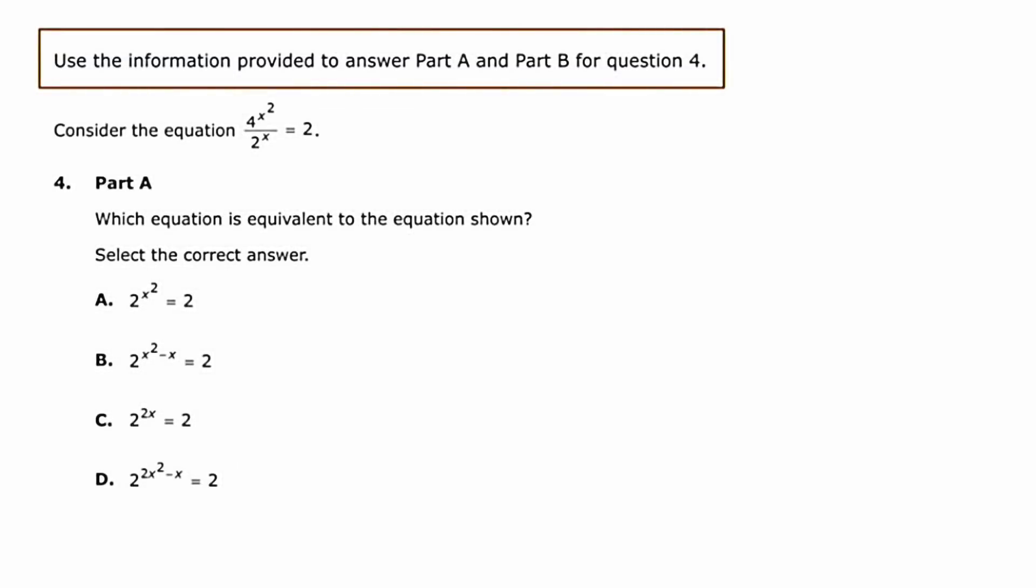Hey there, this is MathCamp321, giving you another solution to a PARCC practice test. This is for the Algebra 2, question number 4 from the 2014-2015 practice test. Just to be very clear, this is a two-part question, so this is part A. They're asking us to consider the equation 4 to the x squared over 2 to the x equals 2. In part A, they want us to know which of the following equations is equivalent to the one that's given to us.